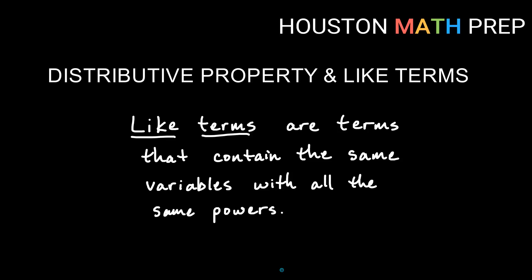In this video we're going to talk about when we use the distributive property, making sure that we combine the like terms correctly. Like terms are terms that contain the same variables with all the same powers. For example, something like 5x and 3x are like terms — I can add them together, just like I can add 5 cats and 3 cats to get 8 cats.